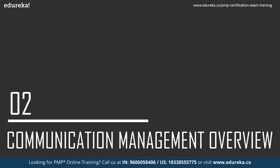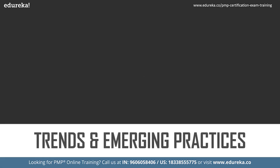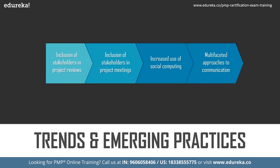There are a lot of ways communications are done: verbal communication and written communication. Within these two, you can think about formal verbal, formal written, informal verbal, and informal written — four types of communication. Trends and emerging practices include inclusion of stakeholders in project reviews and meetings, increased use of social computing, social platforms, and multifaceted approaches to communication.